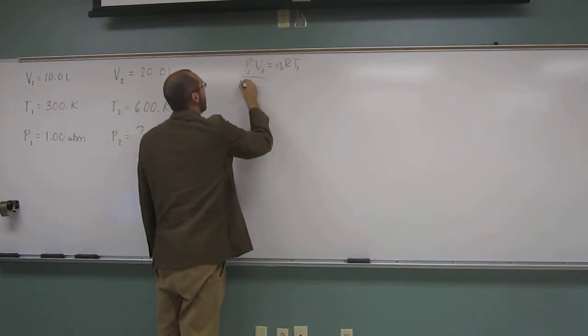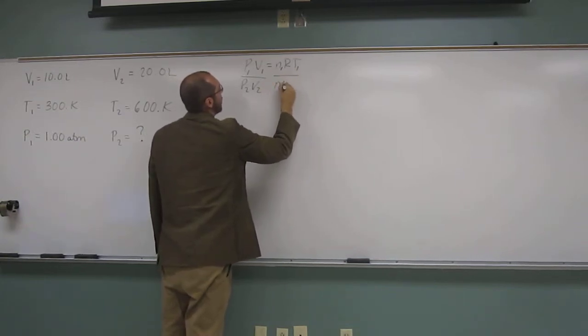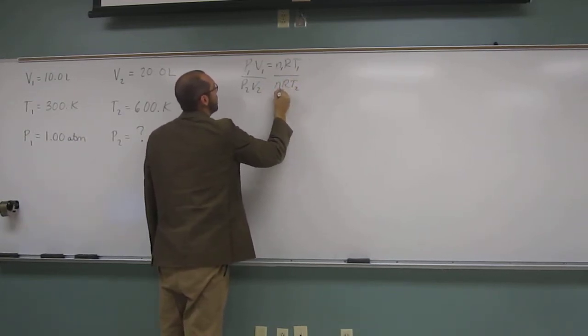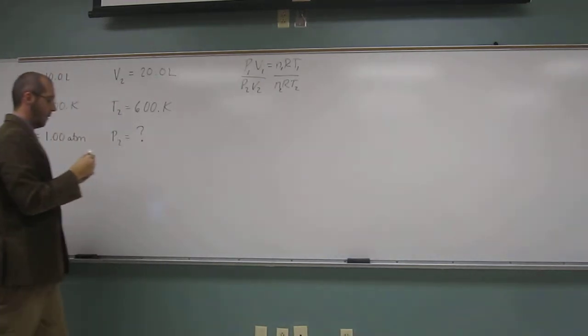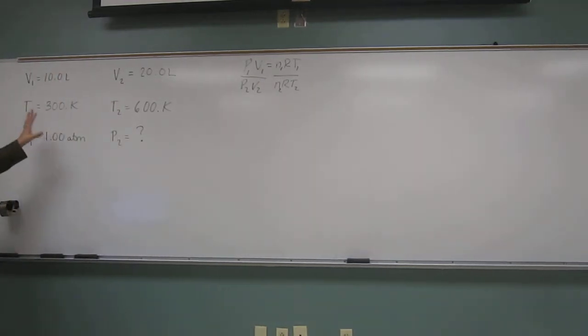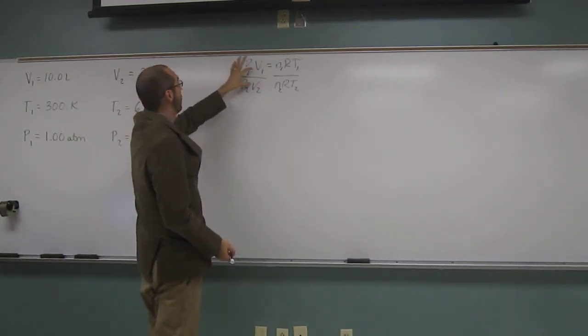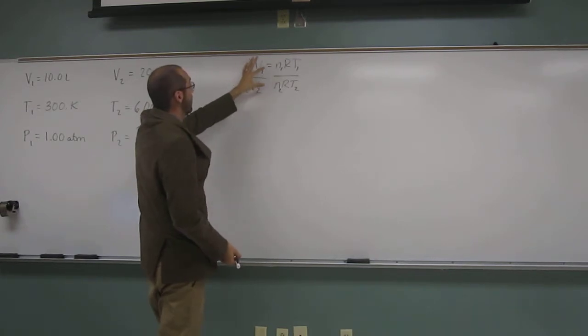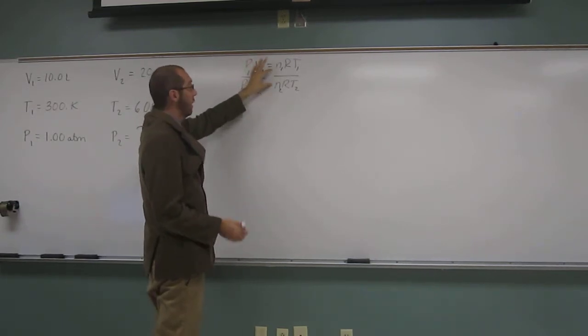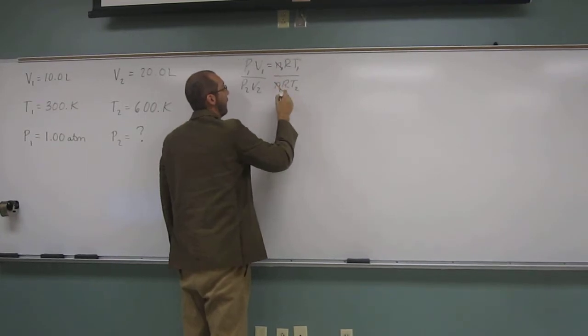PV equals nRT. And we're going to put twos. Okay, and now we're going to cancel out the things that didn't change. So pressure changed, right? So that stays in there. Volume changed. That stays in there. Number of moles, did that change? No. So we're going to cancel that out.